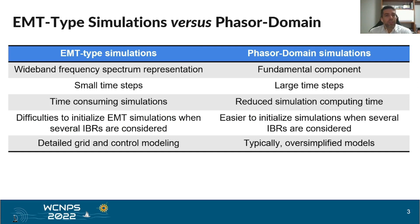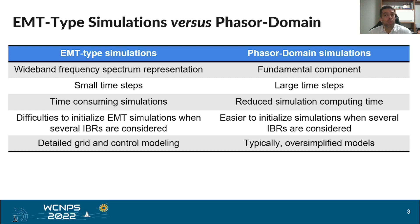This table compares EMT-type simulations and phasor domain simulations. Starting with EMT-type simulations, they are capable of representing wideband frequency spectrums and simulating higher frequencies; small time steps are required, which result in time-consuming simulations. There are also some difficulties to initialize EMT simulations when several IBRs are considered in the same simulation case. But even with these drawbacks, detailed grid and control modeling is possible.